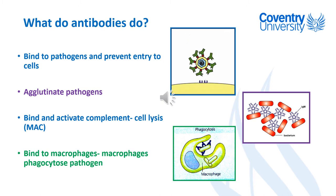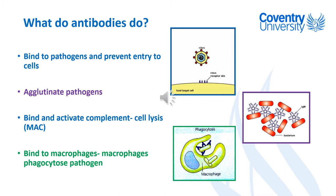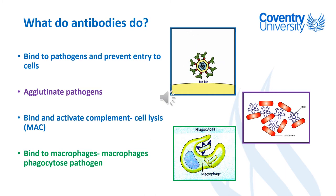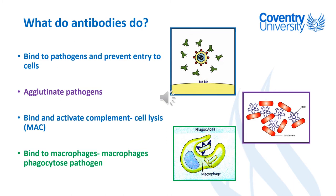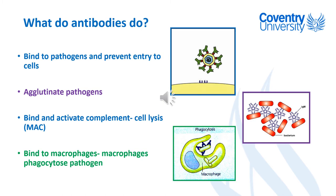Antibodies can also activate proteins known as complement proteins — small molecules which are part of your immune system. When activated, they can form pores — holes — in the cell surface membrane of a bacterium, causing the cell to lyse, burst, and die. This is known as the membrane attack complex, or MAC. Additionally, certain parts on the cell membrane of macrophages allow antibodies to bind and simultaneously bind to the pathogen, really facilitating and helping the macrophage in phagocytosing that pathogen.